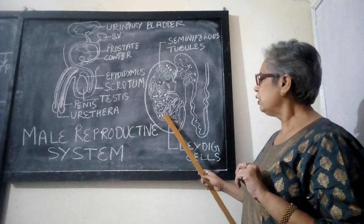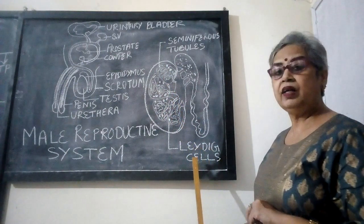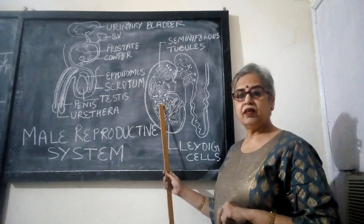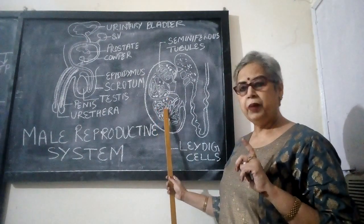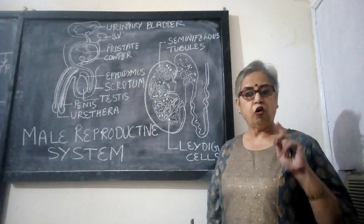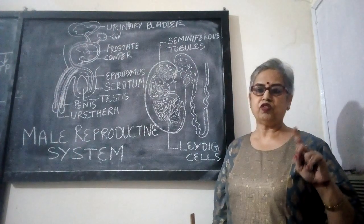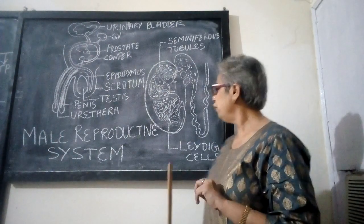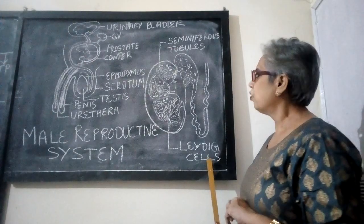The space between the seminiferous tubules is filled with another type of cells called Leydig cells. The testes perform a dual function: number one, the production of the male gamete, that is sperm; and number two, the production of the male hormone, testosterone. Testosterone is responsible for secondary sexual characters in males and is produced by these Leydig cells.